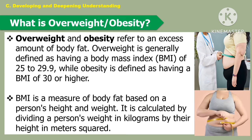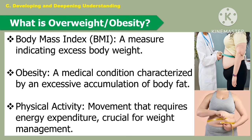Overweight and obesity refer to an excess amount of body fat. Overweight is generally defined as having a body mass index or BMI of 25 to 29.9, while obesity is defined as having a BMI of 30 or higher. BMI is a measure of body fat based on the person's height and weight, calculated by dividing a person's weight in kilograms by their height in meters squared. Obesity is a medical condition characterized by an excessive accumulation of body fat.